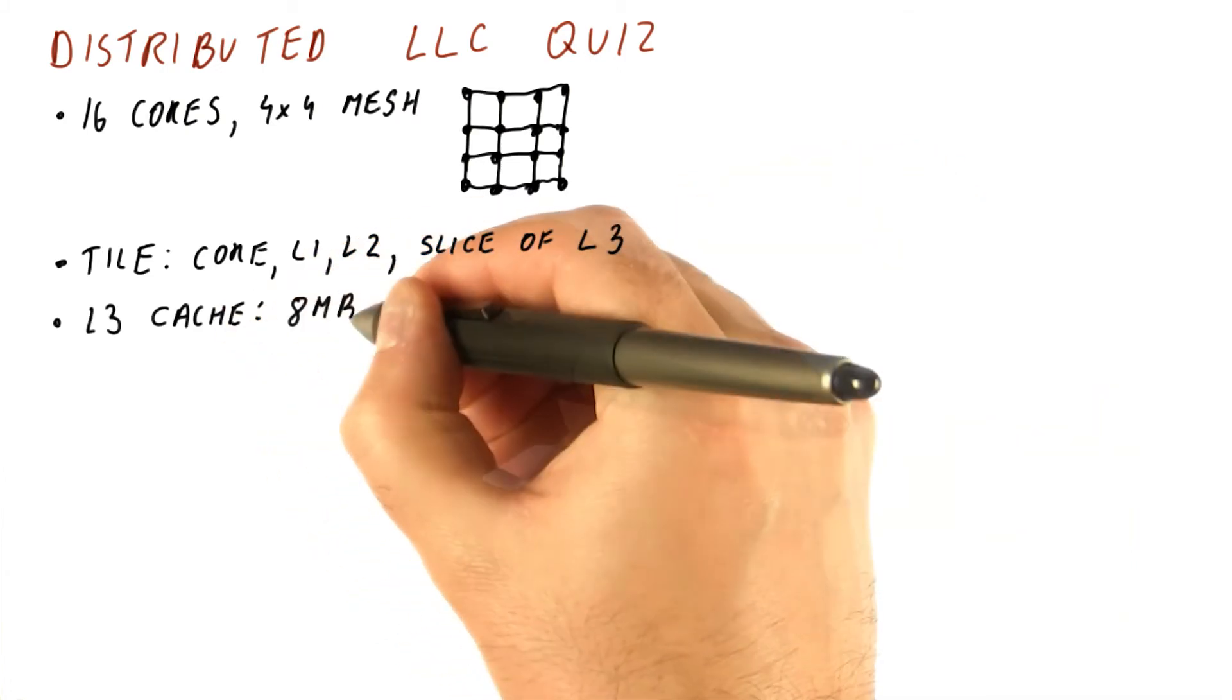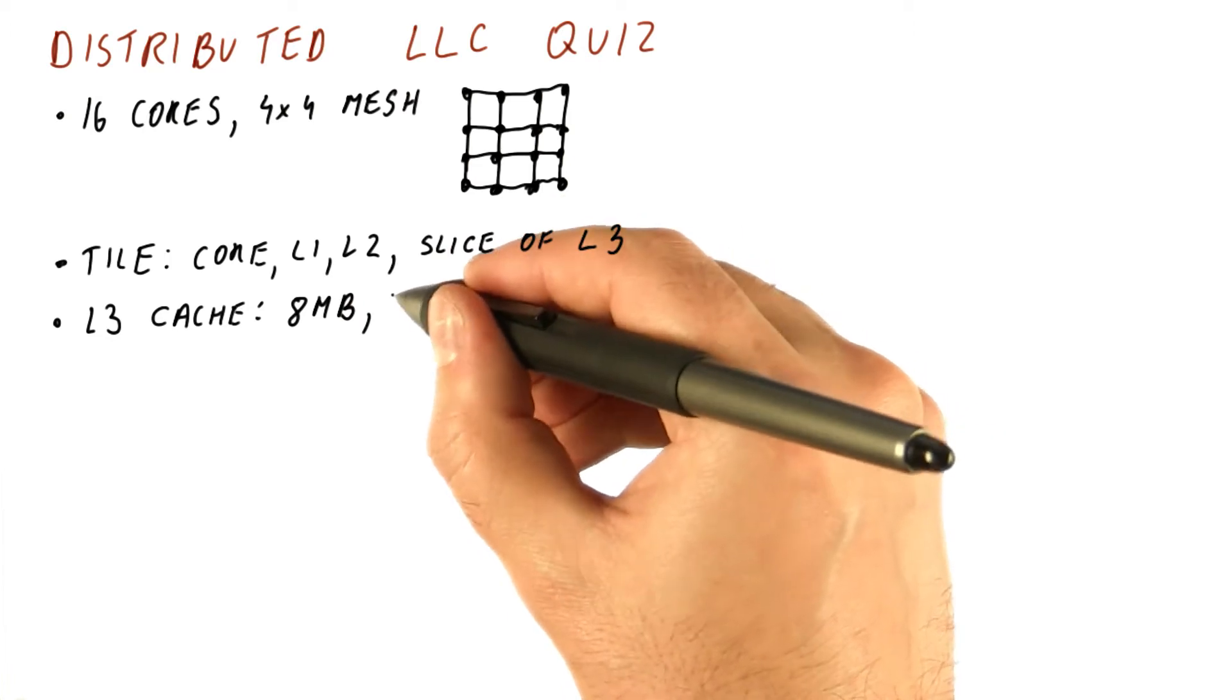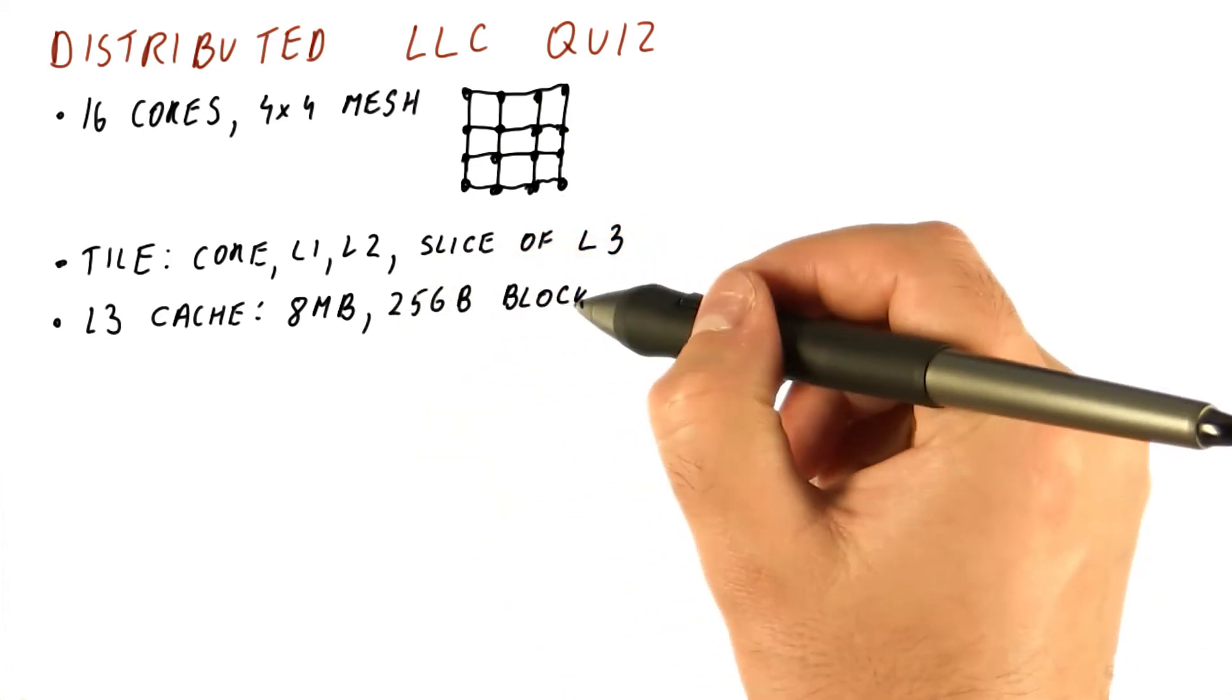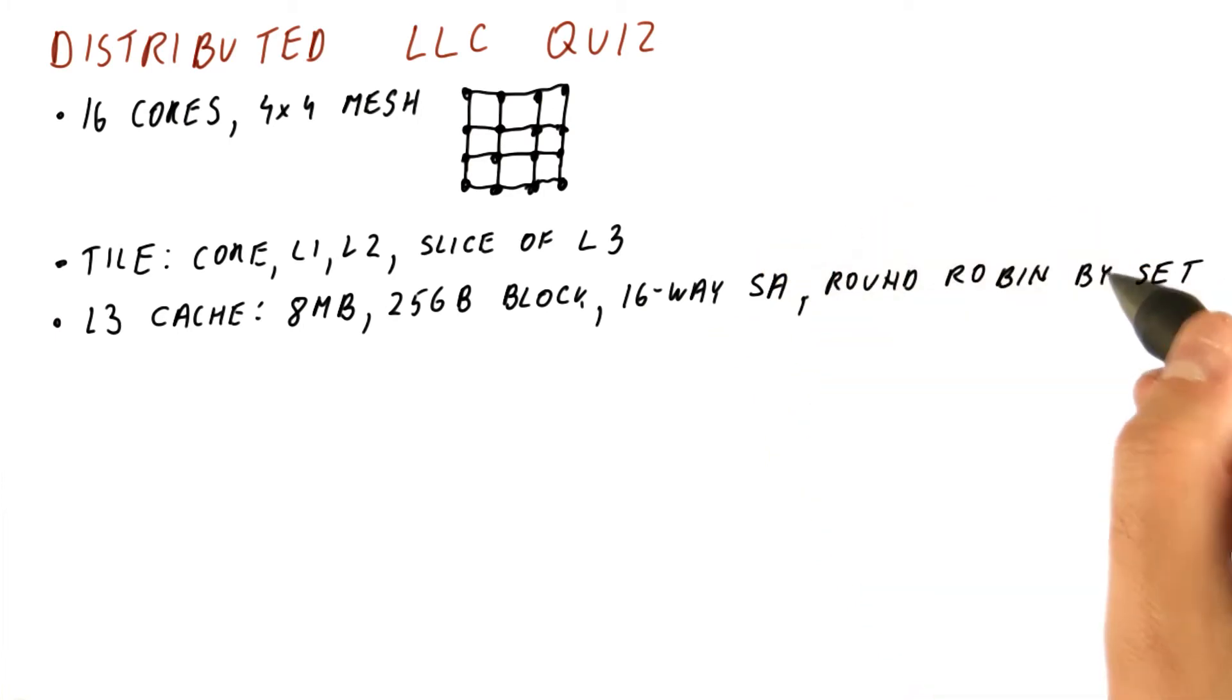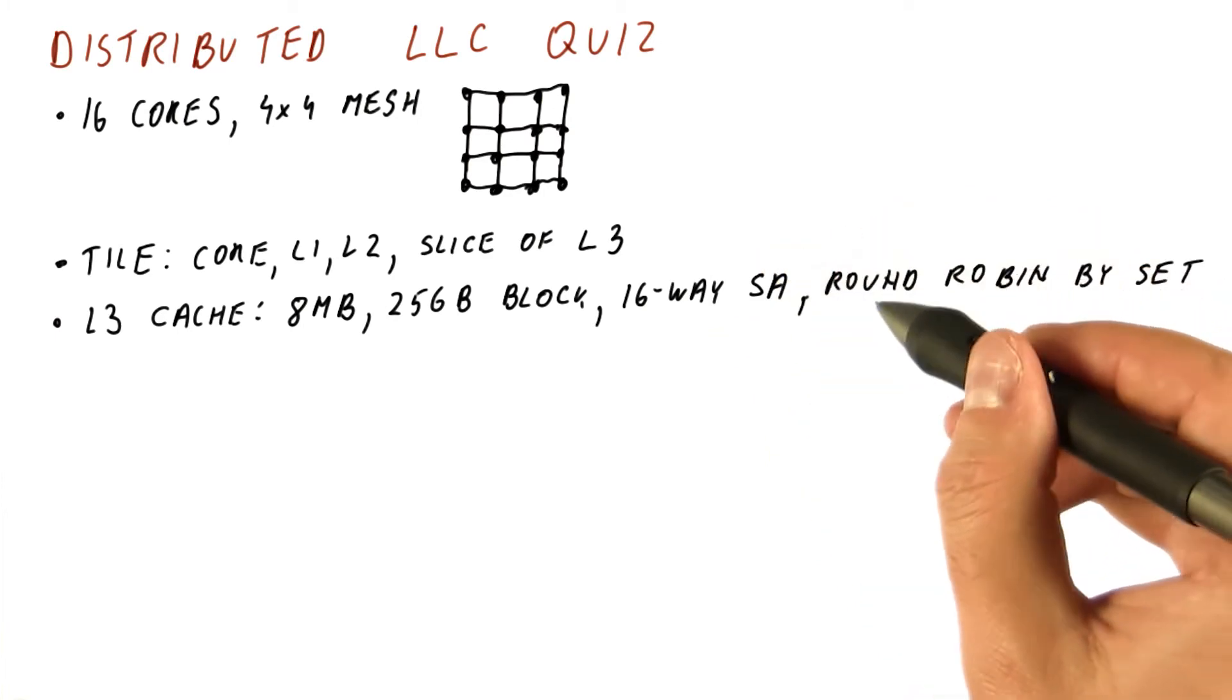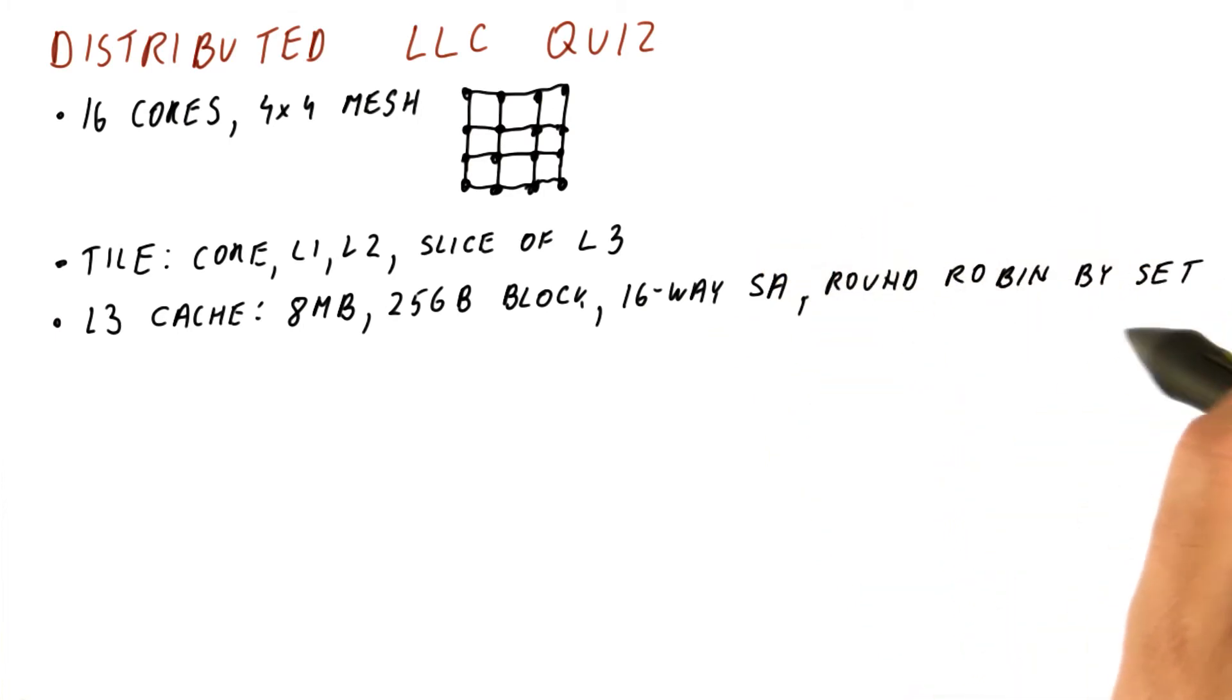And that level three cache is eight megabytes in size, has a 256 byte block size, is 16 way set associative, and is distributed among the slices round robin by set number.